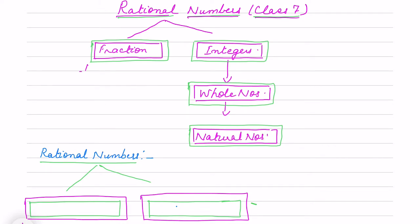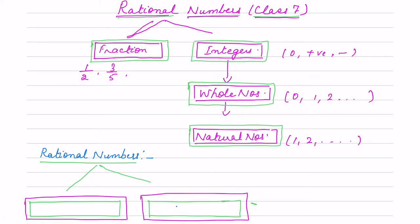Fractions are like 3 by 5. Integers include 0, all positive numbers and negative numbers. Whole numbers are 0, 1, 2, 3, 4, and so on. When we have counting numbers, that is natural numbers. Let me change the pen color so that it will be easy to follow.